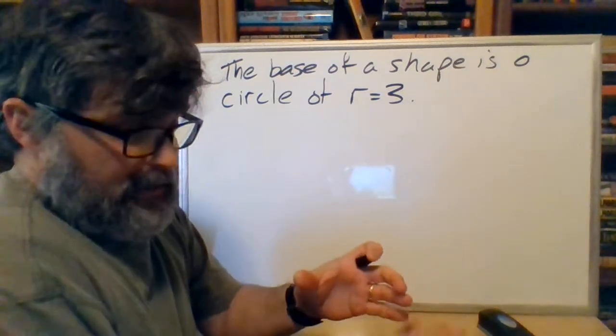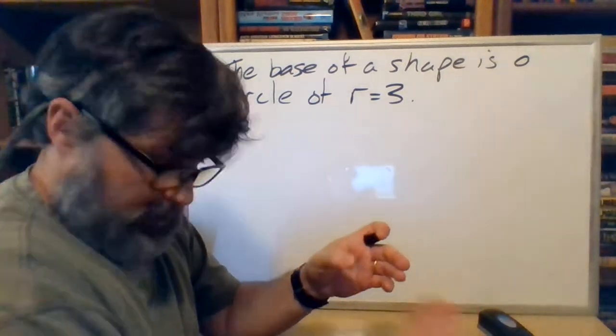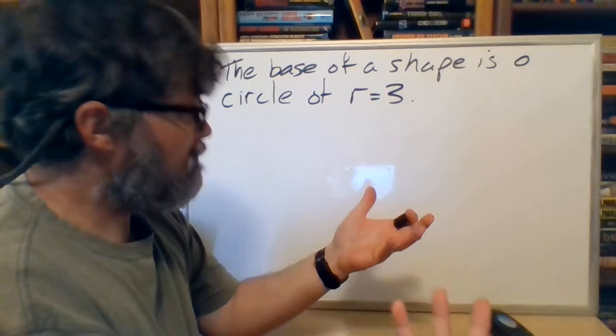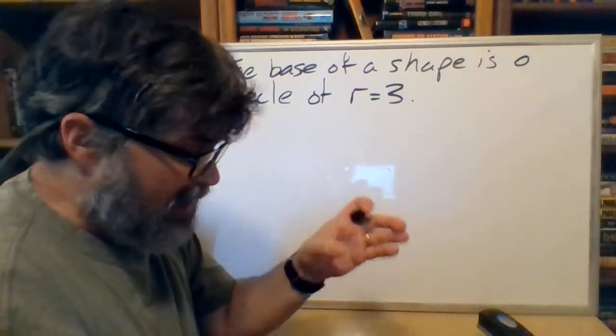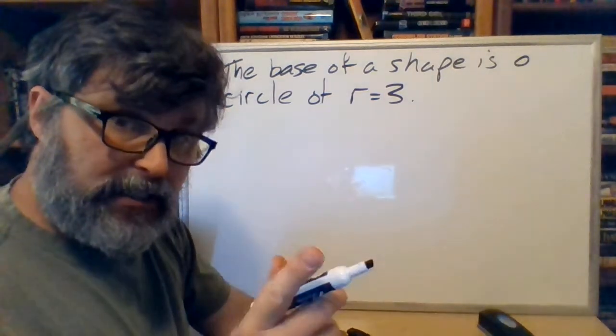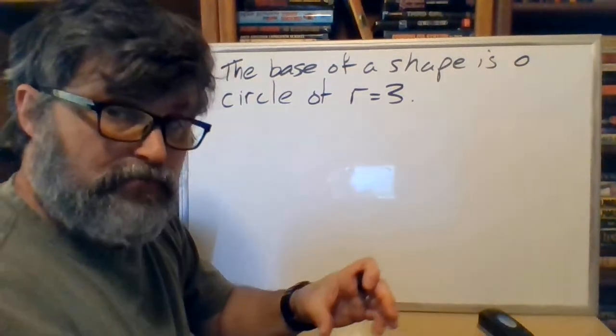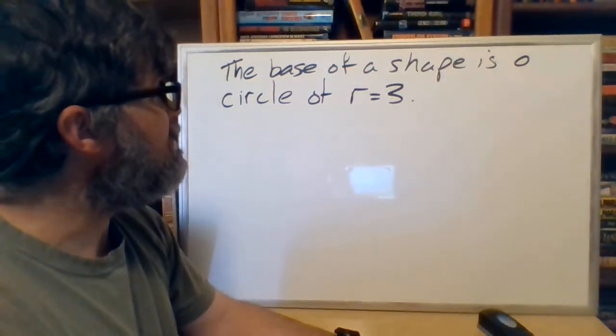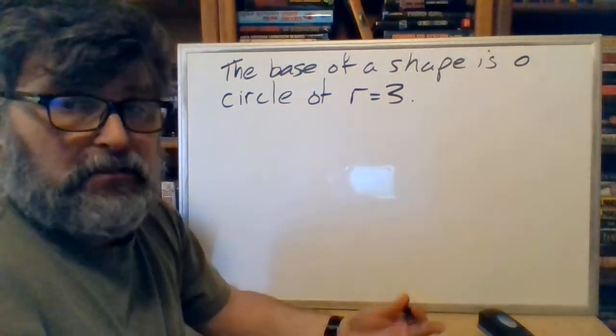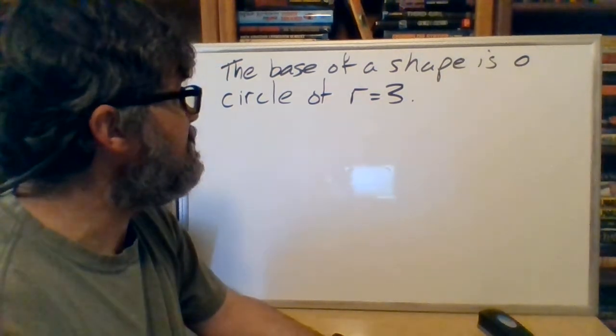So the bottom of my shape is going to be a circle of radius three. Think of a can of something. That bottom has got a circular area. I'm going to use that as my base. It's not the area I'm going to use later, because the area I use later is of a cross-section. This is just the base. And the base of the shape is going to be a circle of radius three, whatever units you want doesn't matter.